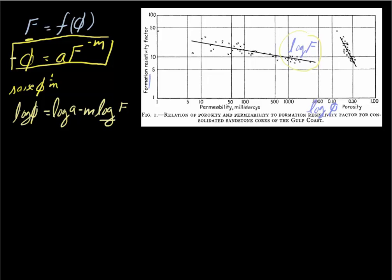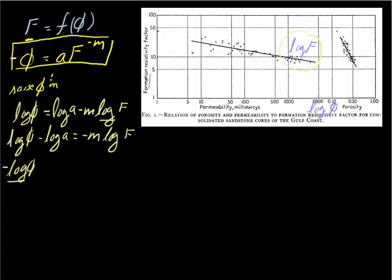To do that we just have some algebraic manipulation. We'll subtract log of a from both sides, giving us log of phi over m plus log of a over m, which is equal to the log of the formation factor.